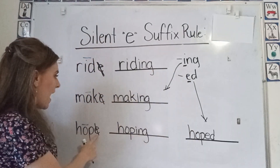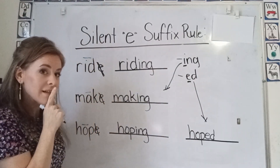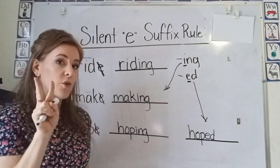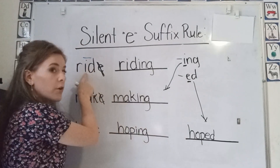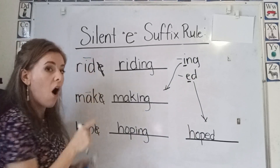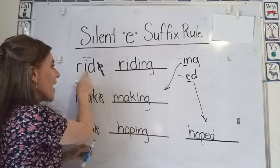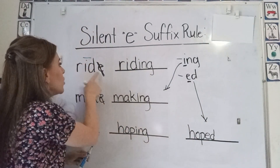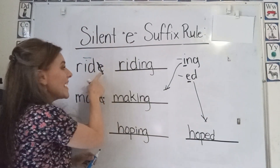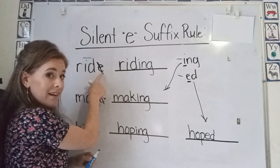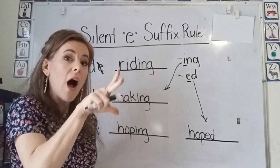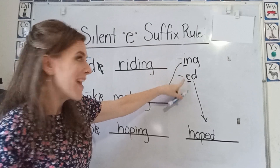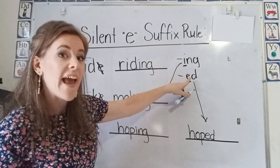So here we have silent e's, and they're silent because we have two vowels. With our two vowel rule, when our first vowel is long — 'I' — and our second vowel is silent — shh, silent. So when you have a silent e, you drop the e before adding your suffix that begins with a vowel.